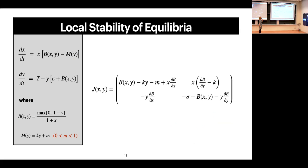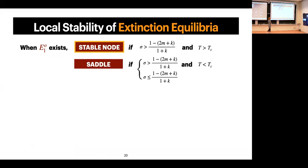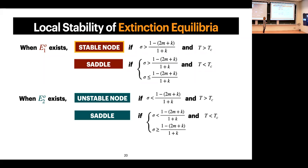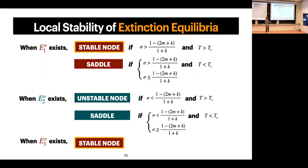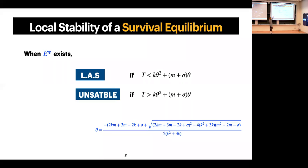For local stability, we perform linearized stability analysis using the Jacobian matrix. The first extinction equilibrium, when it exists, is either a stable node or saddle. The second extinction equilibrium, if it exists, is unstable—either unstable node or saddle point. The third extinction equilibrium is always a stable node when it exists. The survival equilibrium E* is locally asymptotically stable when t < θ (a complex condition) and unstable when t > θ.